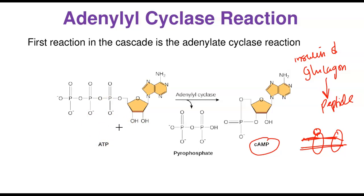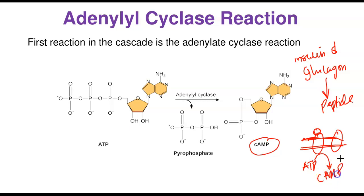Cyclic AMP is synthesized from ATP — the energy currency of the cell. ATP is not just an energy currency; it is also very important in regulation and signaling. The moment each of these hormones binds to a receptor on the cell membrane, the receptor triggers activity of adenylyl cyclase, and ATP is converted to cyclic AMP.